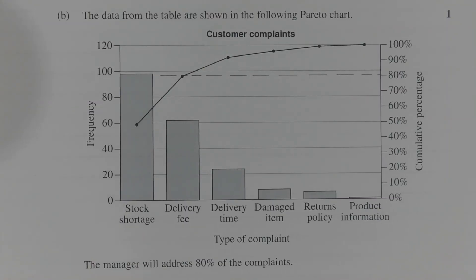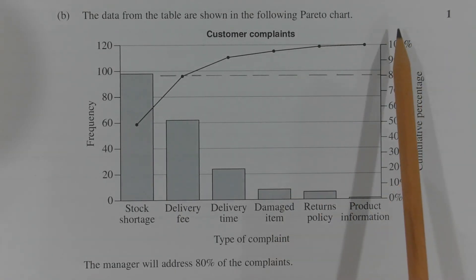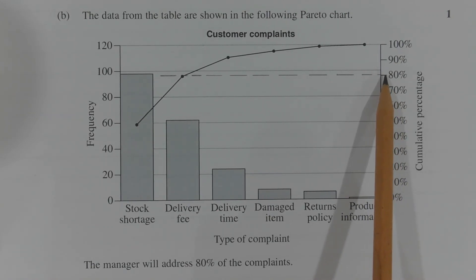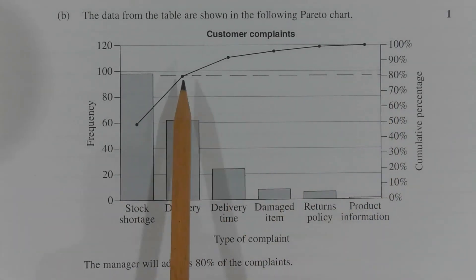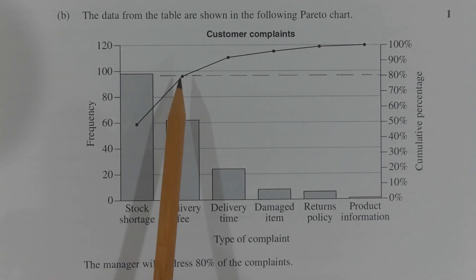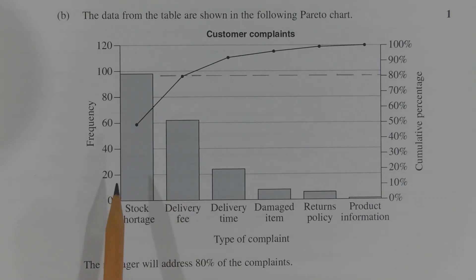There are two ways of answering this question. The first way is to refer to the Pareto chart. Referring to the cumulative percentage axis and drawing a dotted line from the 80% mark all the way across, we can see that the dotted line crosses a point that represents the cumulative percentage of delivery fee and stock shortage combined. So 80% of the complaints involve stock shortage or delivery fee.